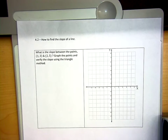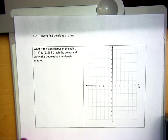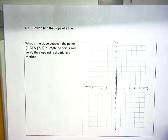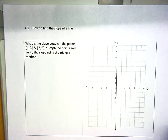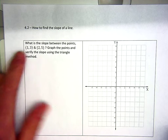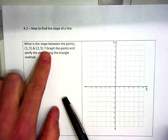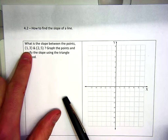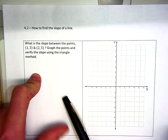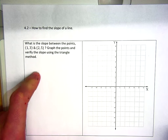Alright folks, here are some notes on section 4.2 out of Big Ideas — how to find the slope of a line, or the slope of the line that contains two specific points. What is the slope between the points (1, 3) and (2, 5)? Graph the points and verify the slope using the triangle method.